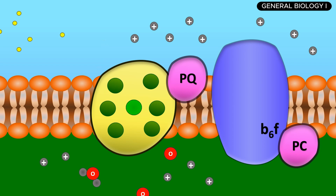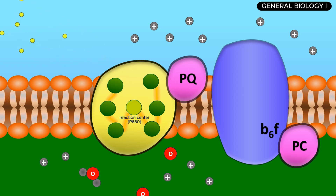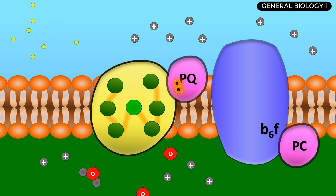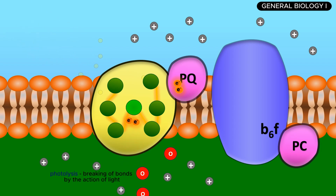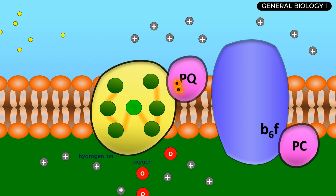Light is first absorbed by pigment molecules like chlorophyll by capturing photons. The energy from these photons is channeled to the reaction center of the photosystem, specifically to a pair of chlorophyll molecules. This energy excites electrons, boosting them to a higher energy state. To replace the excited electrons, water molecules are split, producing oxygen, protons, and electrons through a process called photolysis. The oxygen is released as a byproduct, while the electrons are transferred through the electron transport chain.